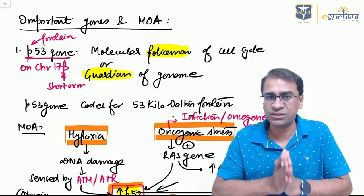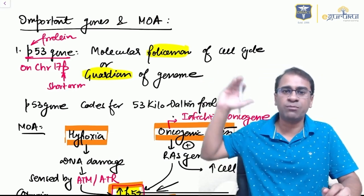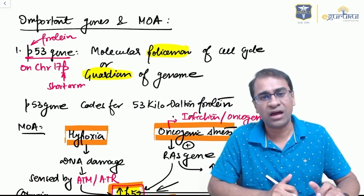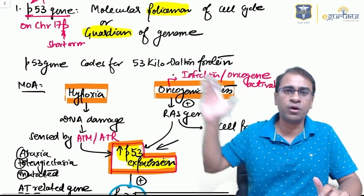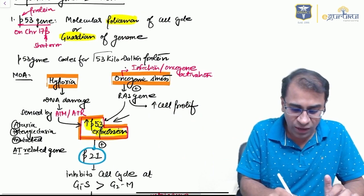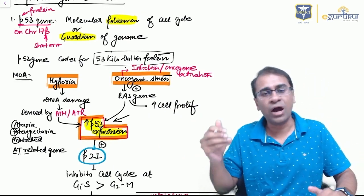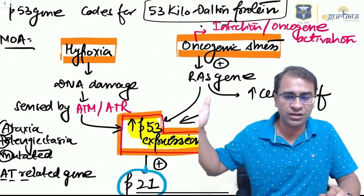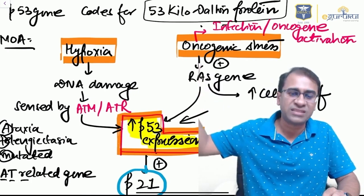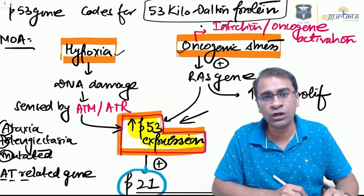A very good example of tumor suppressor gene is p53, also called the molecular policeman of the cell cycle or guardian of the genome. It's called so because it codes for 53 kilodalton protein. How does it get activated? It's activated when there's hypoxia or any oncogenic stress.